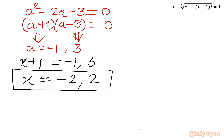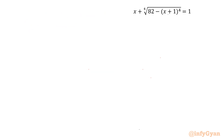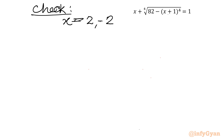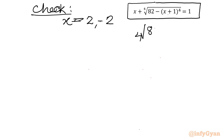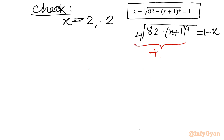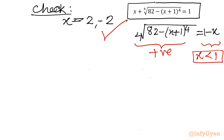We have two candidate solutions. We must examine which is accepted and which is rejected. Rearranging the original equation, the 4th root of (82 minus (x+1)^4) equals 1 minus x. The left-hand side is always non-negative, so the right-hand side must also be non-negative, meaning x must be less than 1. Therefore we accept x equal to minus 2 and reject x equal to 2.